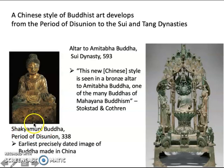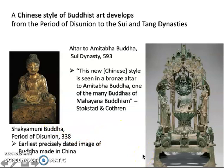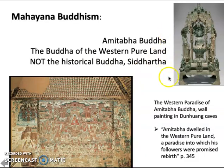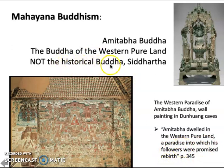Shakyamuni, the sage of the lion clan, is Siddhartha Gautama, who became the Buddha. Amitabha is a figure, a Buddha — not the historical Buddha — in Mahayana Buddhism. Amitabha Buddha is also known as the Buddha of the Western Pure Land, which the textbook describes as a paradise into which his followers were promised rebirth. So that is distinct from the teachings of the historical Buddha.